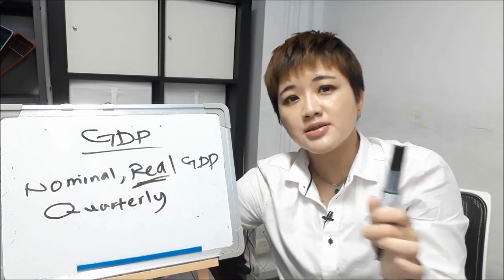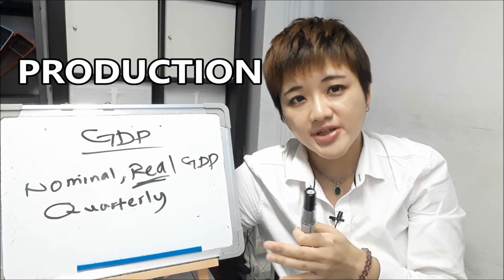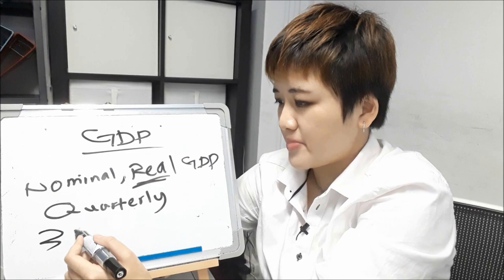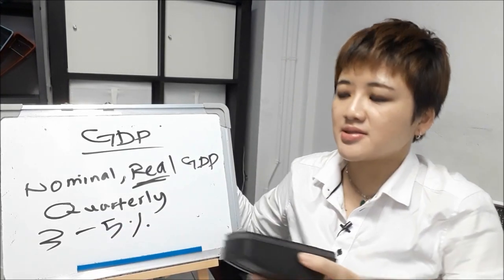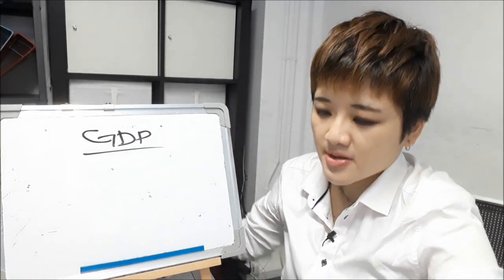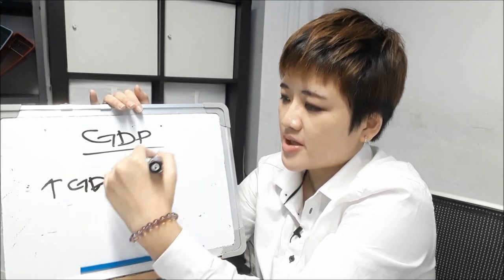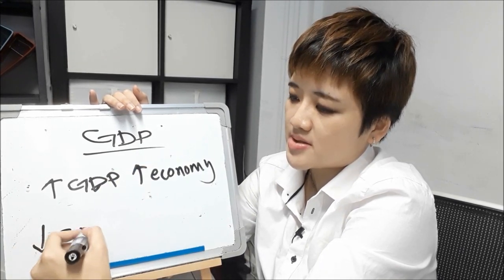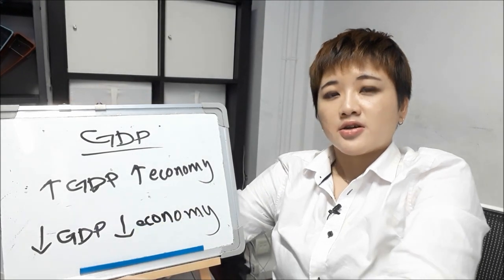GDP measures the production of goods and services by a country — not sales, but production. A healthy, growing economy would have a GDP of between 3% to 5%. In terms of market impact, it's not as volatile because it is late by the time it is released. All things being equal, if real GDP increases it is good for the economy and hence good for the currency. If GDP is decreasing, it is bad for the economy and hence bad for the currency.